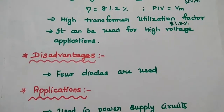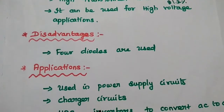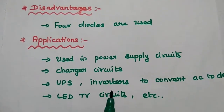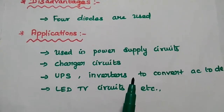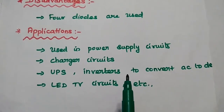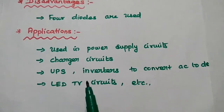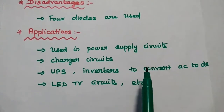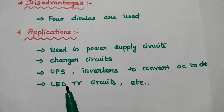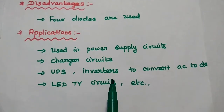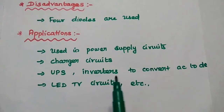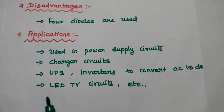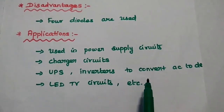Disadvantages: the major disadvantage of the bridge rectifier is that it uses 4 diodes. Applications of bridge rectifier include high voltage applications, power supply circuits, charger circuits, UPS (uninterrupted power supply) circuits, inverters in home appliances to convert AC, LED TV circuits, and more.